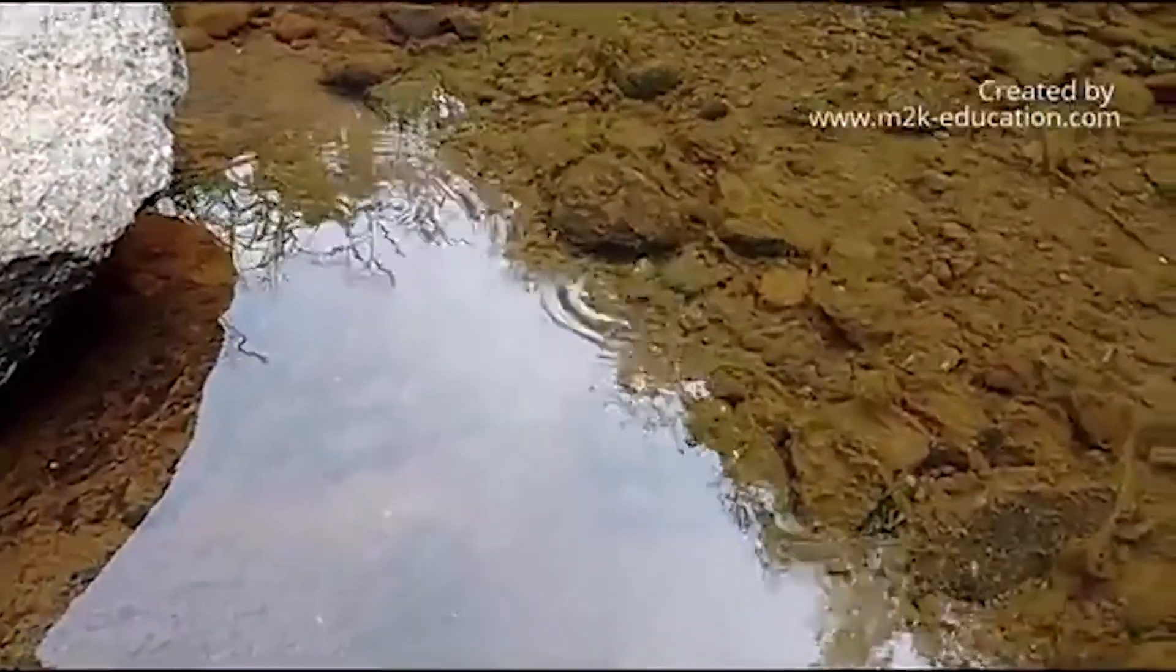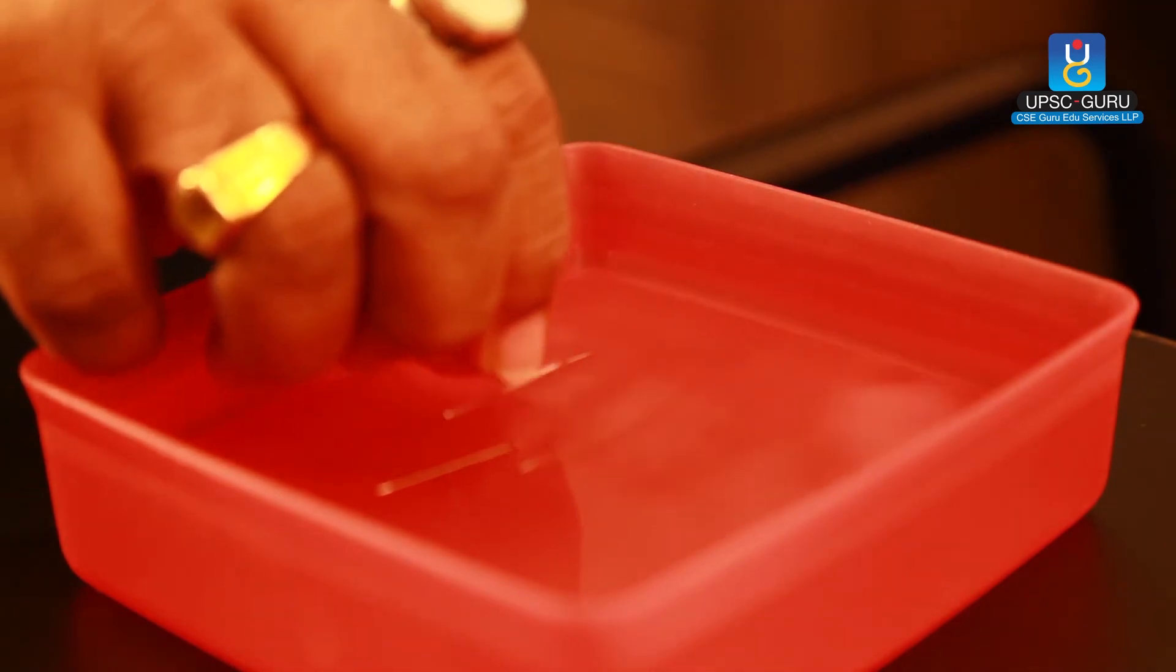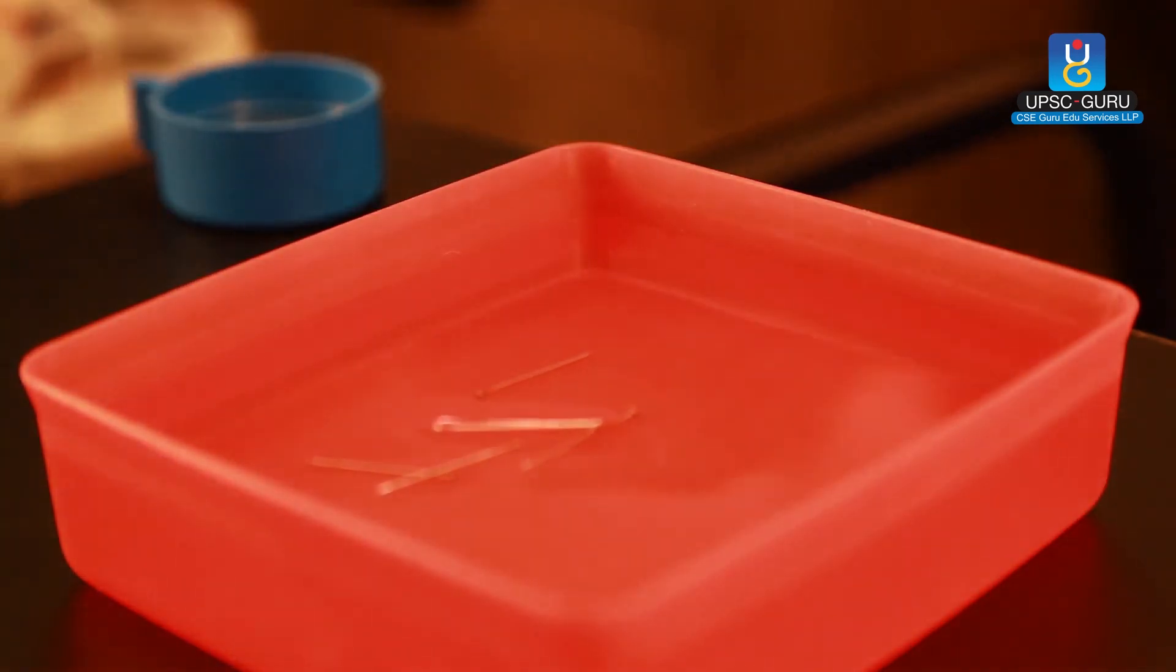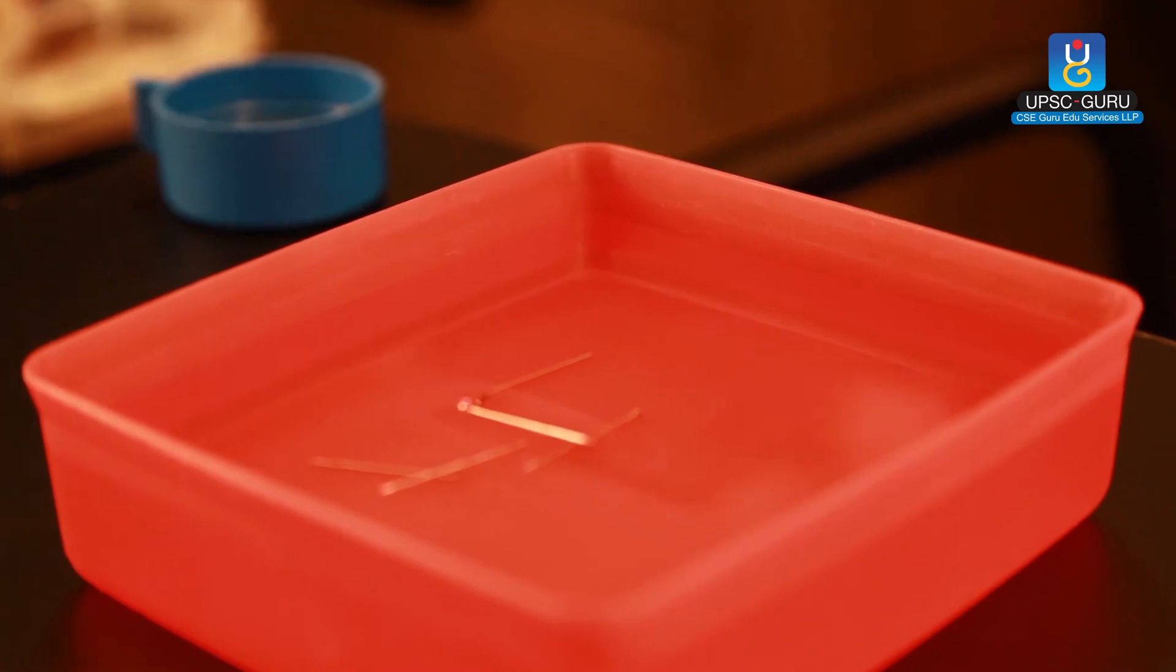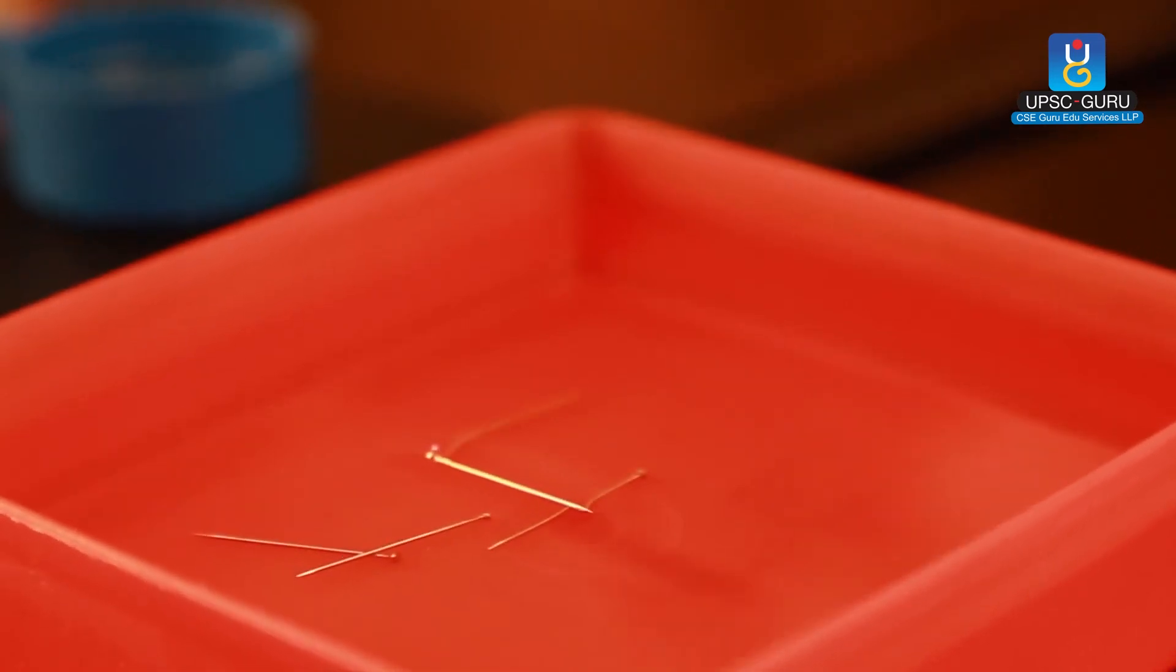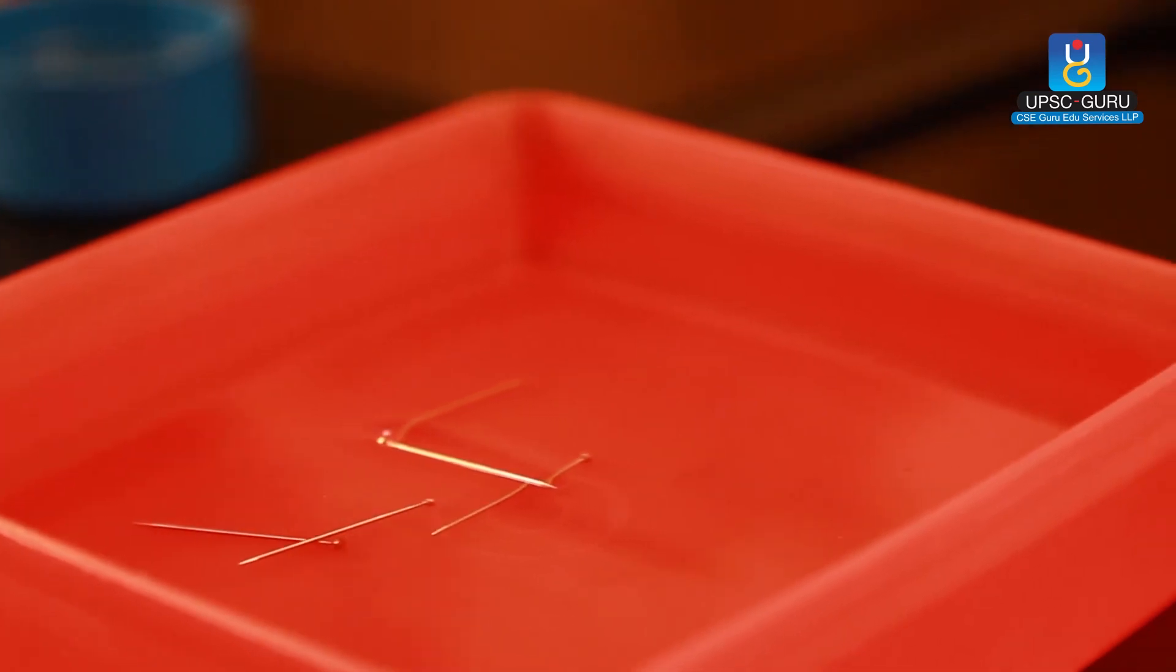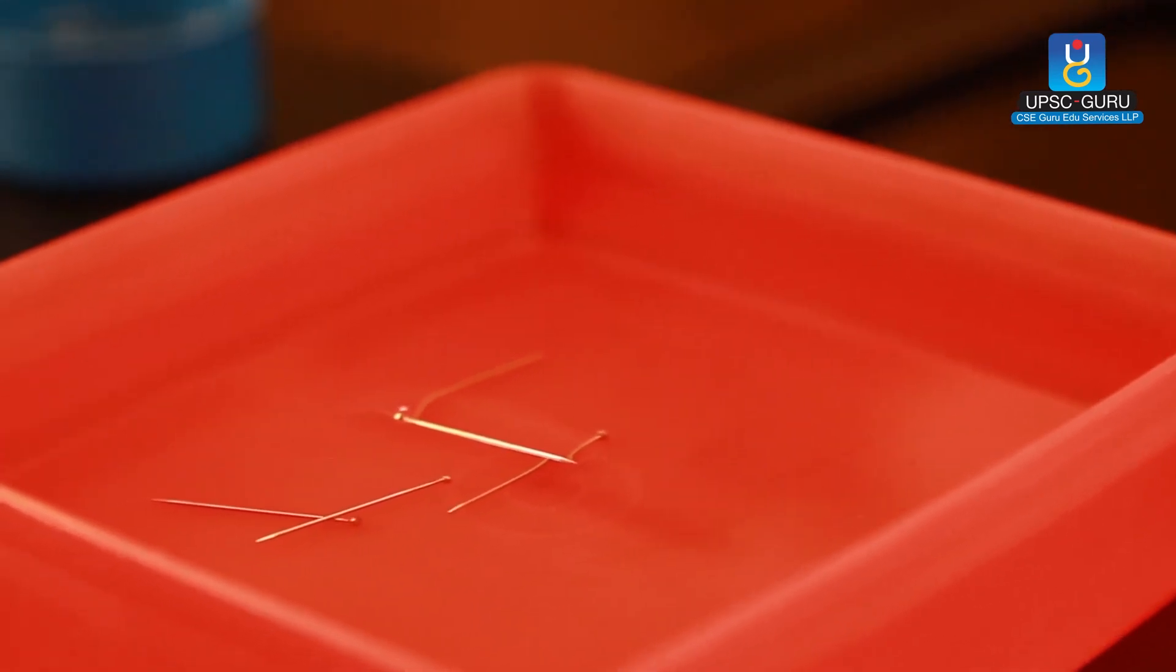Why is this happening? Why does the pin in the first experiment sink down? But if we add it carefully with dry hands, clean and dry hands, then the pin is floating on the surface of water. The density of iron or that steel is more than that of water. The relative density of steel is greater than one. And yet, the steel is floating.